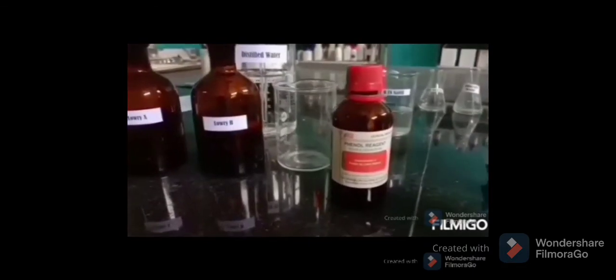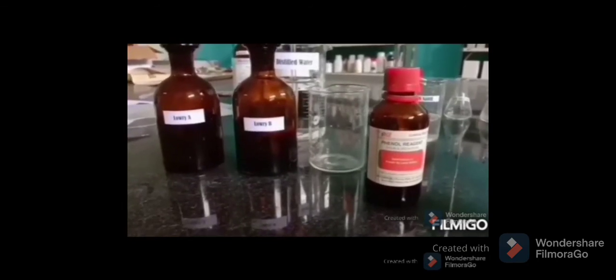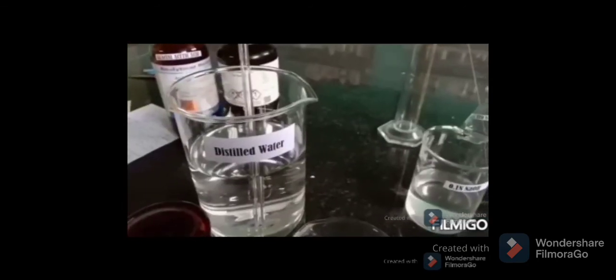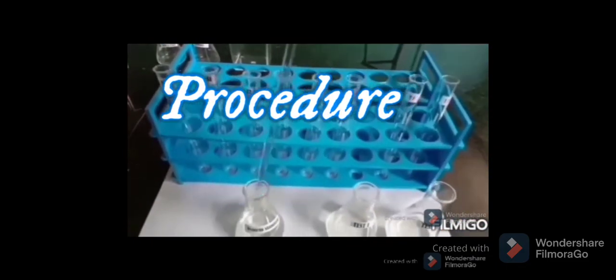Alkaline reagent or reagent C: Lowry A and Lowry B mixed in 50 is to 1 ratio, prepared fresh. Folin-Ciocalteu reagent is also needed. Further, we need distilled water, 0.1 normal NaOH, test tubes marked B for blank, standard tubes S1 to S5, T1 and T2 for test, pipettes, colorimeter, etc.